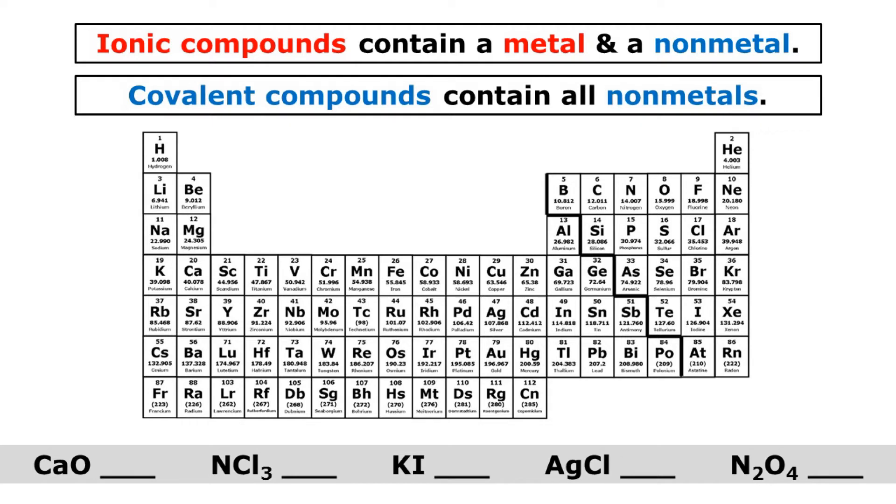It's very important that you can distinguish between ionic compounds and covalent compounds, but it's also very easy to do. Ionic compounds contain a metal and a non-metal.